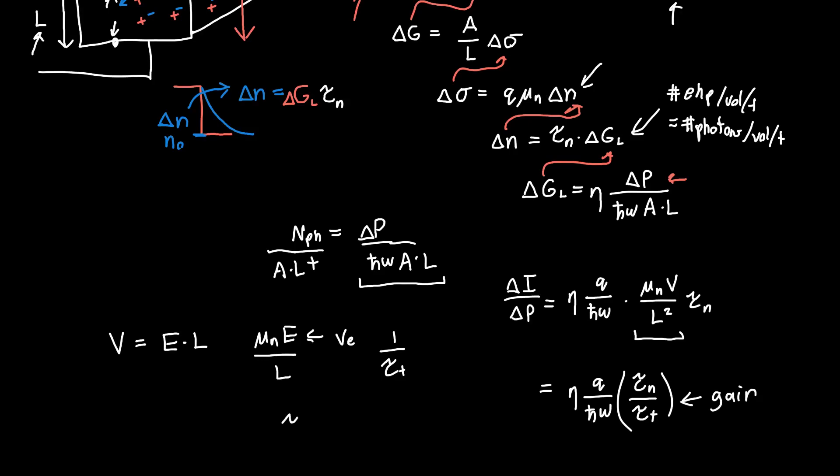If you want tau_t in terms of the voltage, it's just the length squared divided by the mobility times the voltage.